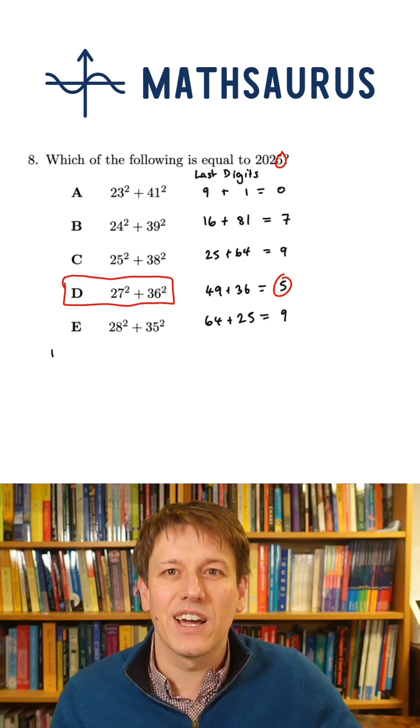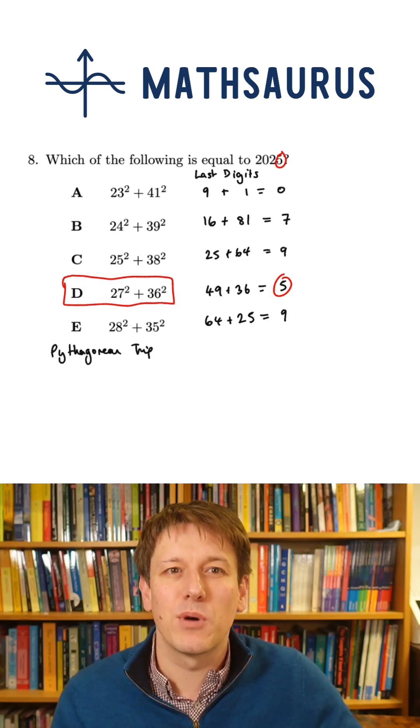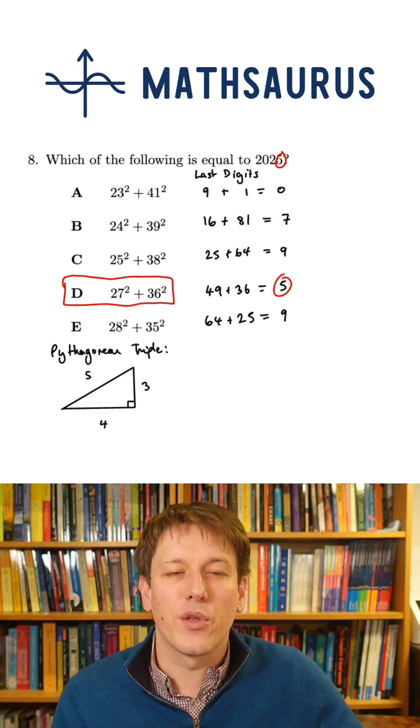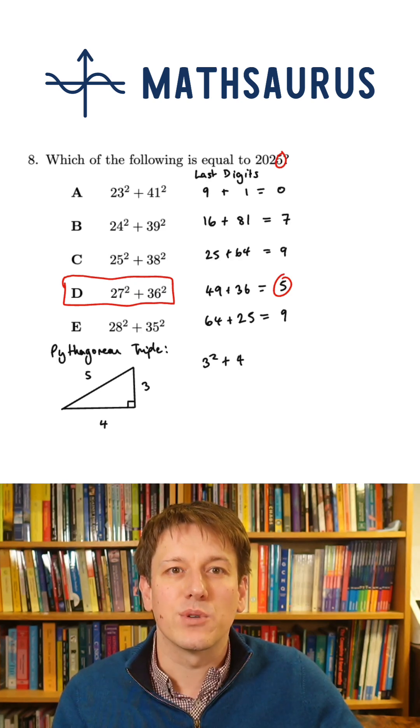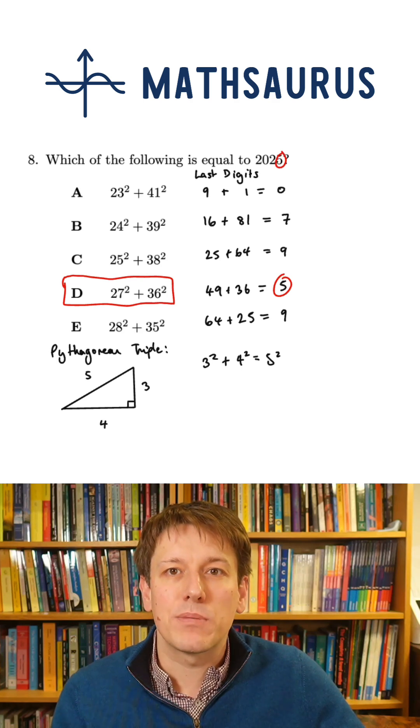There's another sneaky route to the answer here as well, which you might also spot: a Pythagorean triple. So if you've studied Pythagoras' theorem, you'll know there are some Pythagorean triples that satisfy it in right-angled triangles, where we've got 3 squared plus 4 squared equals 5 squared in this right-angled triangle. But you can scale these triples up by any amount and you still get Pythagorean triples.